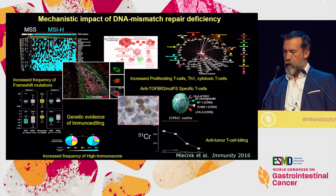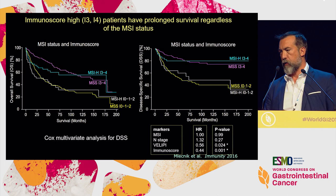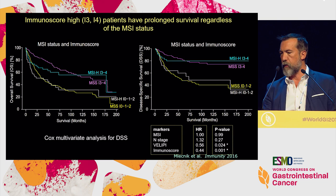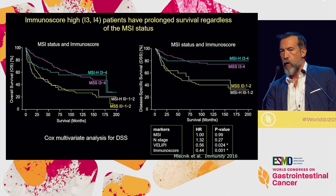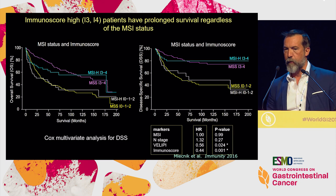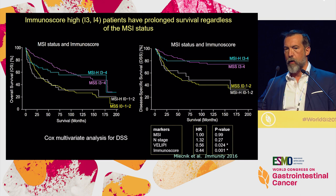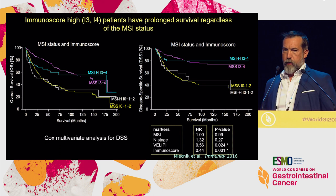Regarding survival in MSI patients, looking at overall survival and disease-specific survival with four curves — MSI high immunoscore, MSI low immunoscore, MSS high immunoscore, MSS low immunoscore — patients with a high immunoscore are protected and live longer, whether they are MSS or MSI. Vice versa, patients with a low immunoscore relapse very rapidly, regardless of MSS or MSI status. MSI patients more frequently have high immunoscore because of frameshift mutations, but what matters for survival is not MSI per se — it's the consequence of MSI, which we detect here with immunoscore.